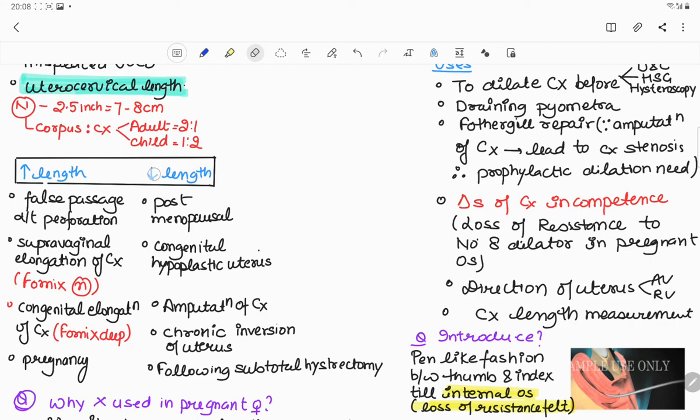The conditions where the uterocervical length is decreased: number one is postmenopausal uterus where the uterus atrophies, number two is congenital hypoplastic uterus, number three is when cervix is amputated for example in Fothergill's repair, number four is during chronic inversion of uterus, and fifth is following subtotal hysterectomy.